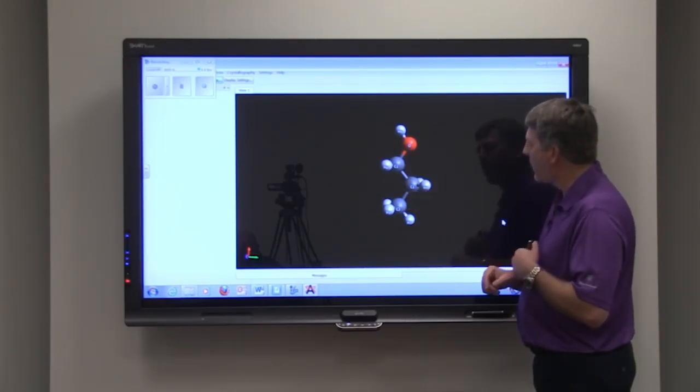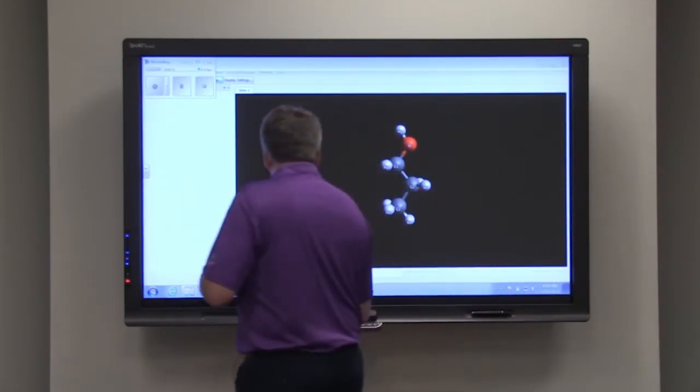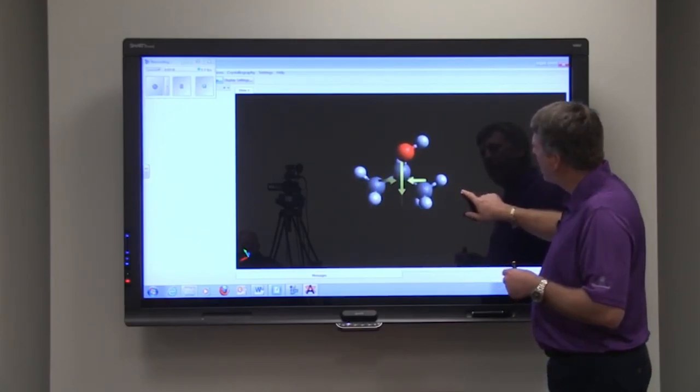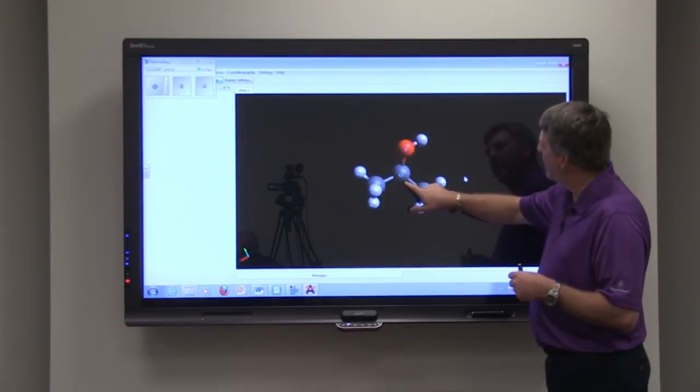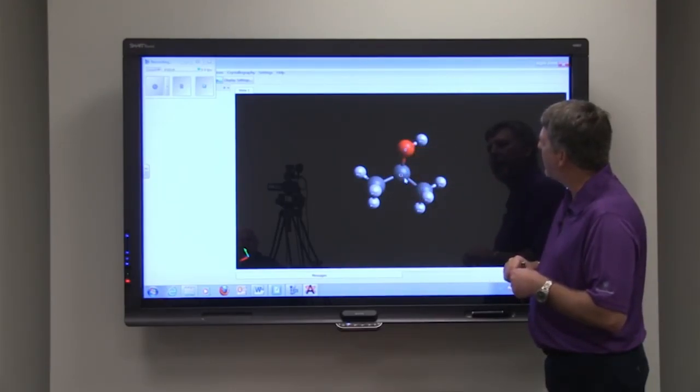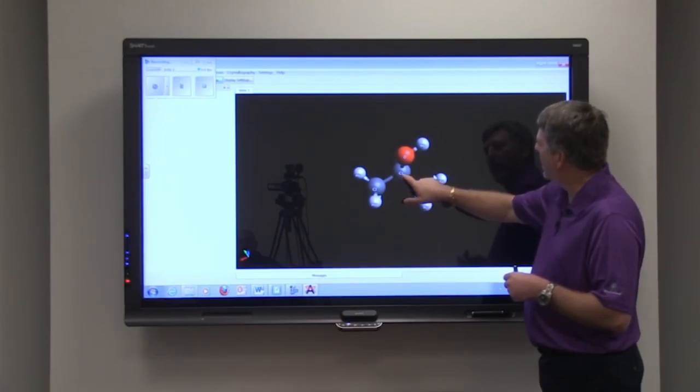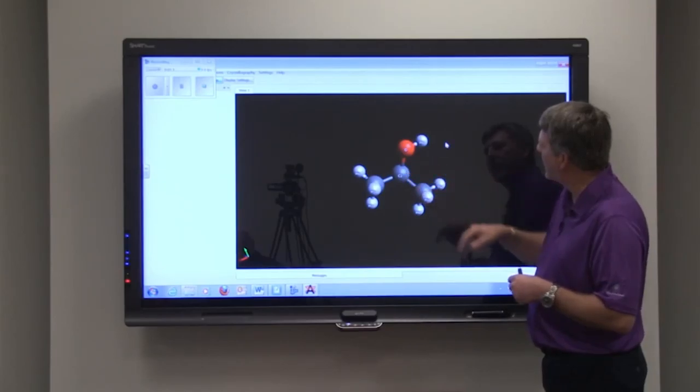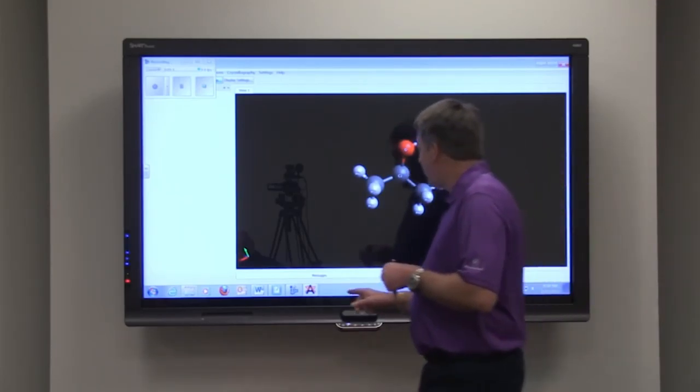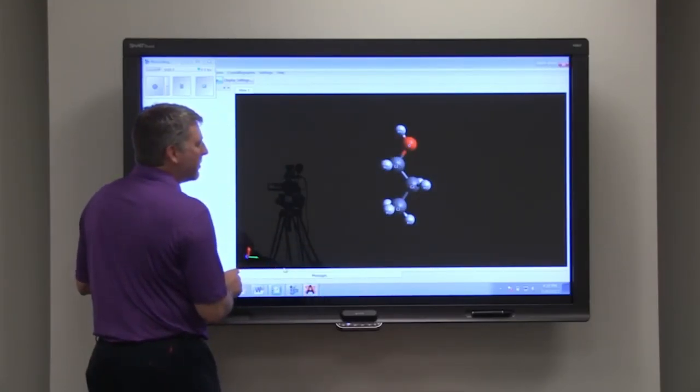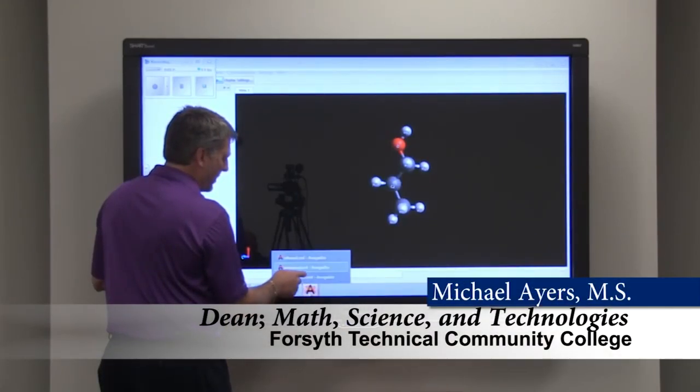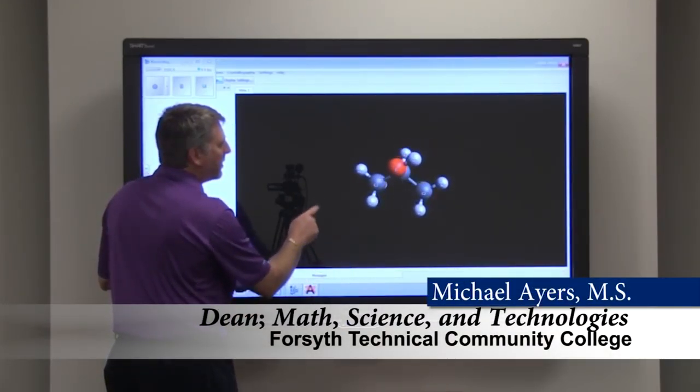But let's look at an isomer of propanol - isopropanol. With isopropanol, you can see that the middle carbon is the one that has the hydroxyl group attached to it. Here is carbon, carbon, carbon, and then the hydroxyl group attached in the middle. So propanol and isopropanol are isomers of one another. They both have the same molecular formula, but you can see that their structural formula is very different.